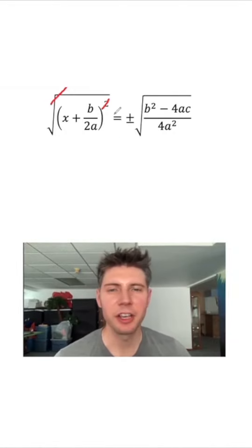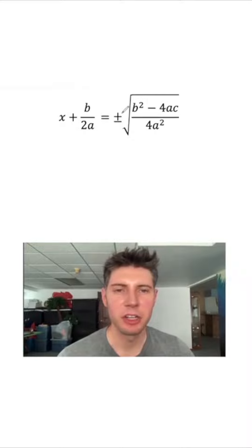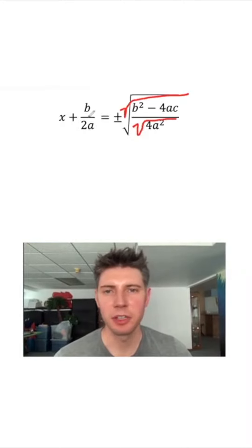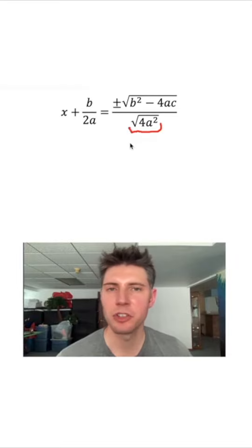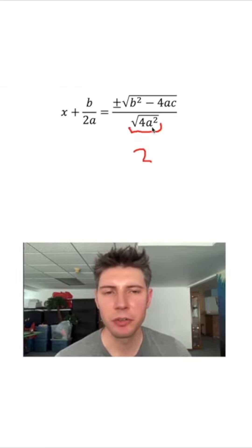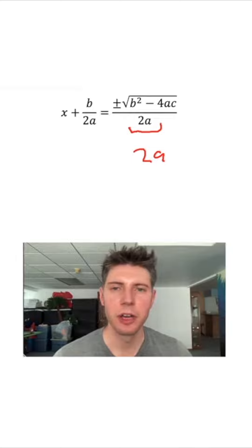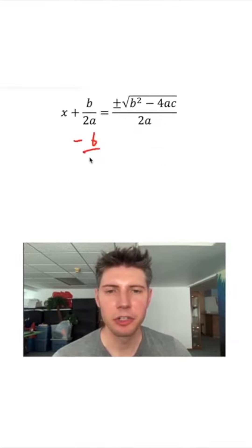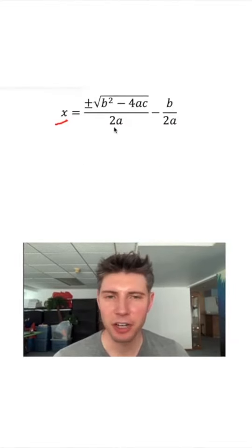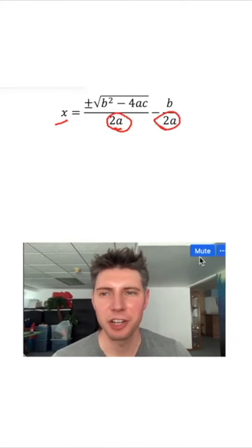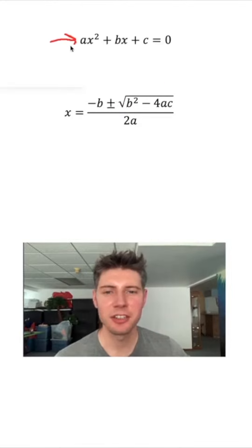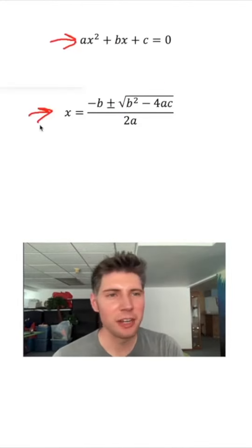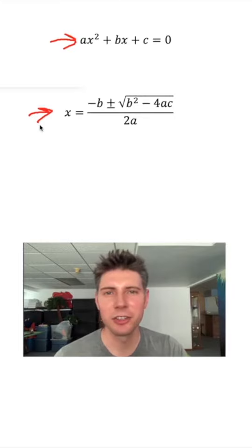Next, we square root both sides. The plus-minus is very important here because before square rooting, the degree was 2, so there were two solutions — we don't want to lose one of those. That's the reason for the plus or minus. The square root and the square cancel on the left side. On the right, we can square root top and bottom separately: the square root of 4a squared becomes 2a. Then we subtract b over 2a from both sides, combine the two fractions with common denominator 2a, bring the negative b in front, and those are the steps to derive the quadratic formula.